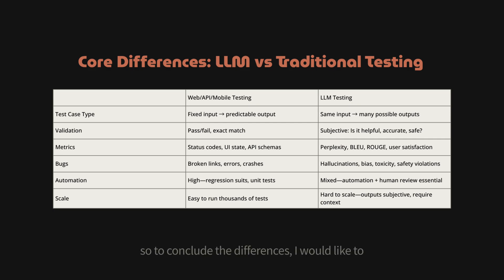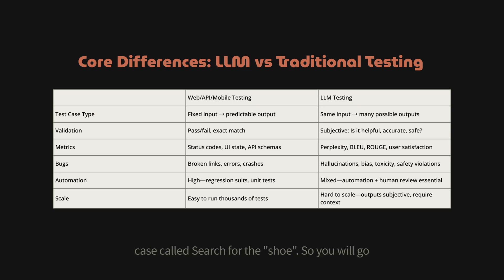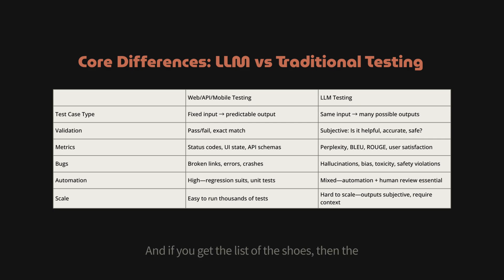To conclude the differences, let's consider a real-world example. For traditional web or API testing, imagine a test case called 'Search for Shoes.' You go to the website, search for shoes, and expect a list with price tags. If the list is empty or returns a 404, the result is failed. If you get the list of shoes, the result is passed.